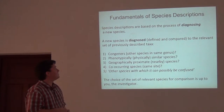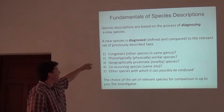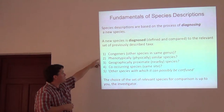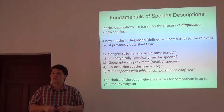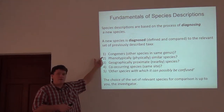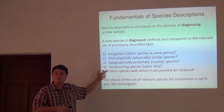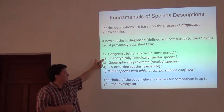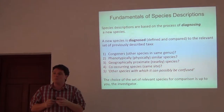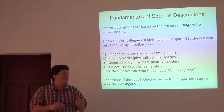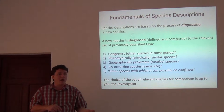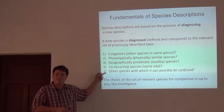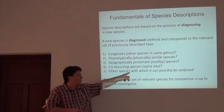Species descriptions are based on the process of diagnosing new species, and that new species is diagnosed compared to the relevant set of previously described taxa — that universe of species out there that are important for your description. With amphibians and reptiles, the things I consider when comparing my suspected new species include: the congeners, which is a term for the other taxa in the same genus; the physically, morphologically, or phenotypically most similar taxa — the things that look like the new species; the geographically proximate species; ones that co-occur at the same site; and basically, what are the other species with which your new species can possibly be confused?